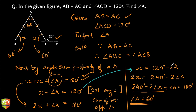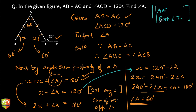This is how you solve this problem. The underlying concepts used here are: one is the angle sum property, and another is the exterior angle property, which we learned in the previous chapter. I hope you understood this problem.